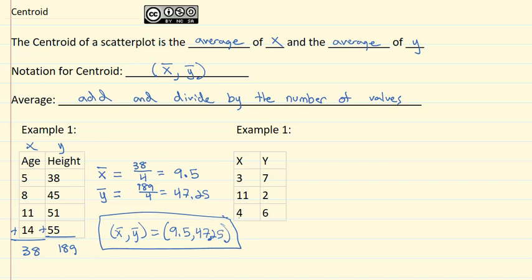Let's see if we can find another centroid. Here on example two, we've got a list of x's and a list of y's. So we'll find x bar, the average x's, by adding the x's. 3 plus 11 plus 4 is 18. And we'll take that 18 and divide by the three points to get 6.